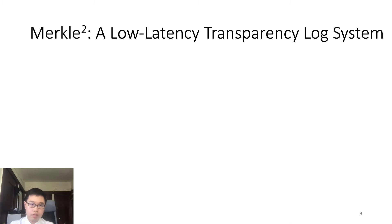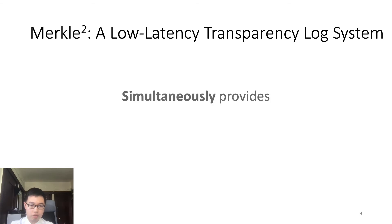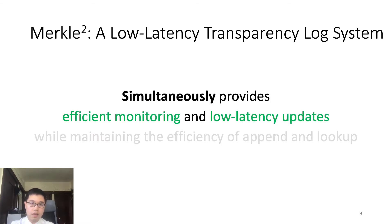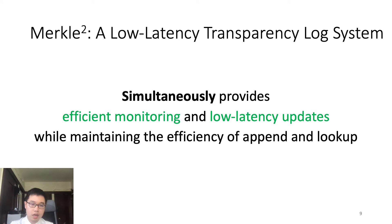Merkle Square is a low-latency transparency log system which simultaneously provides efficient monitoring and low-latency updates, while maintaining the efficiency of append and lookup.